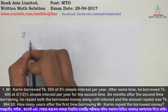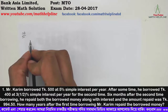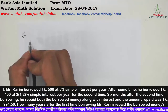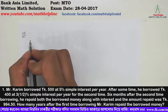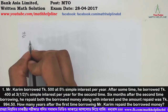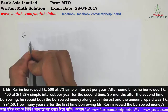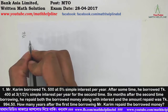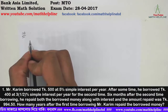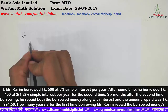Mr. Corrie borrowed $500 at 5% simple interest per year. After some time, he borrowed $400 at 3.5% simple interest per year for the second time. Six months after the second time borrowing, he repaid both the borrowed money along with interest and the amount repaid was $994.50.